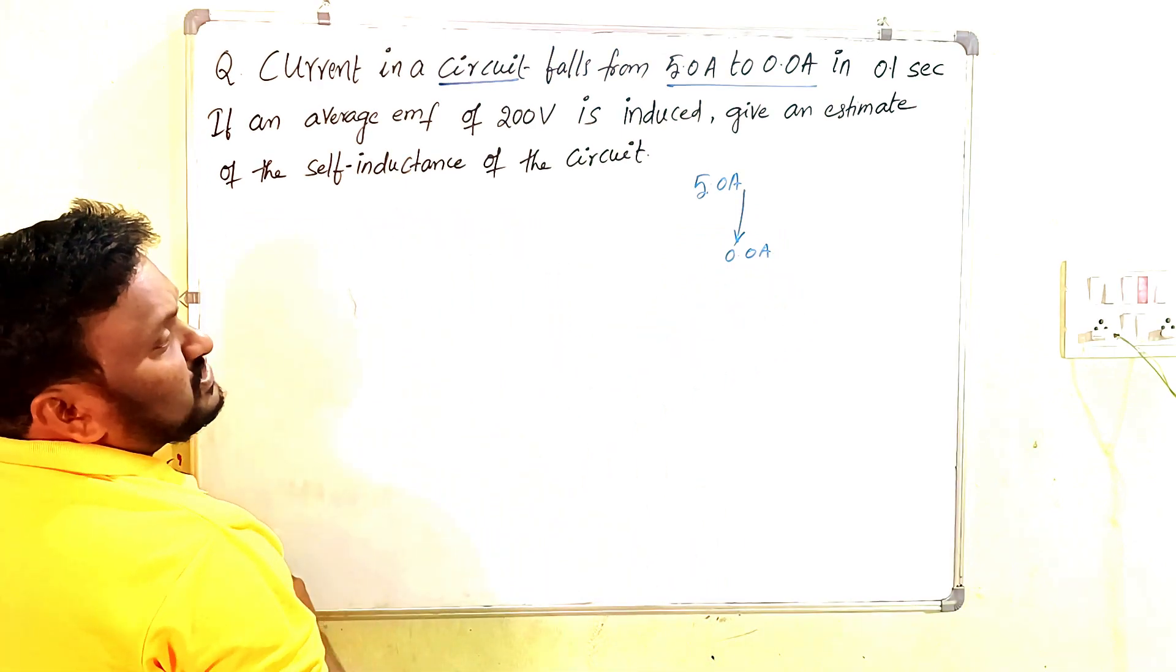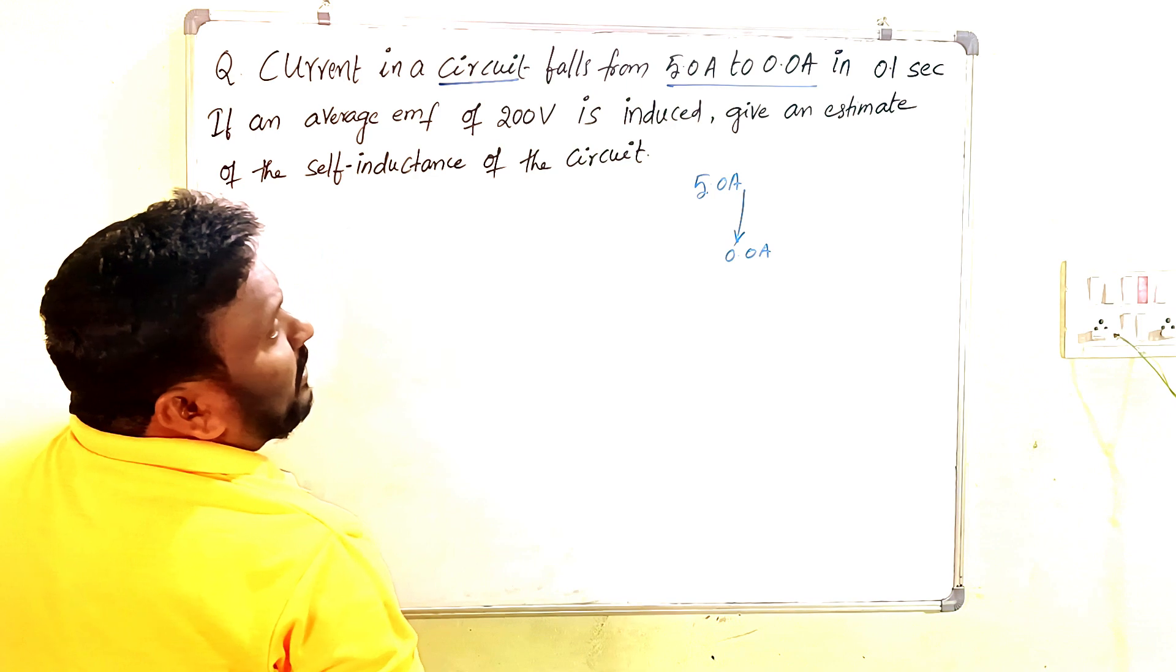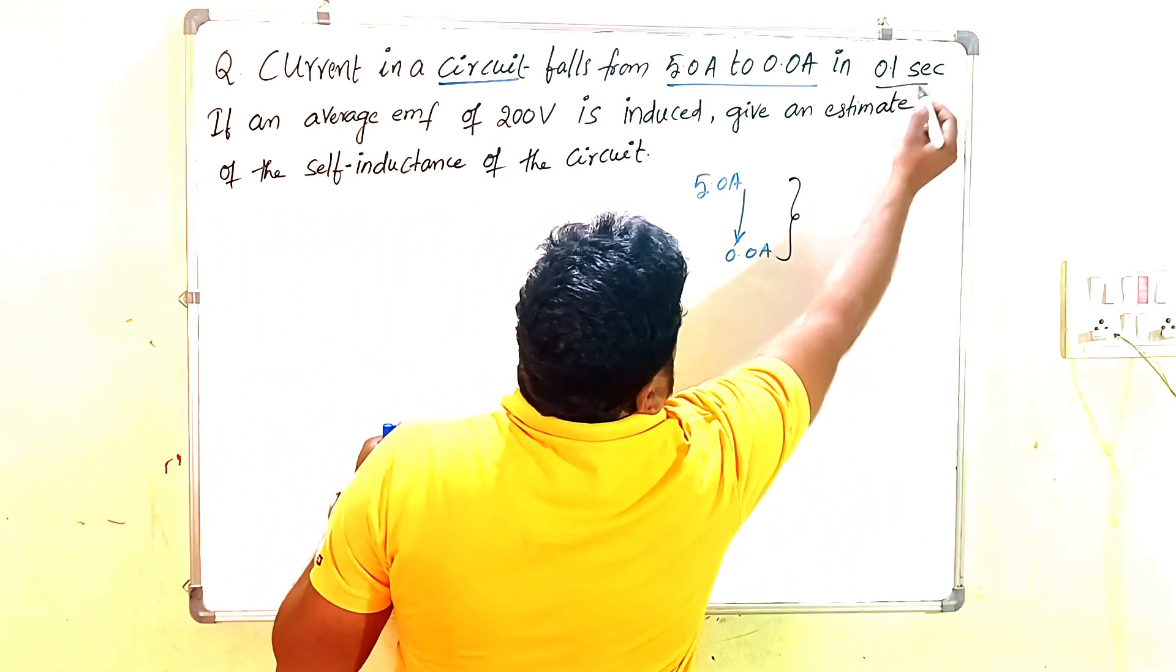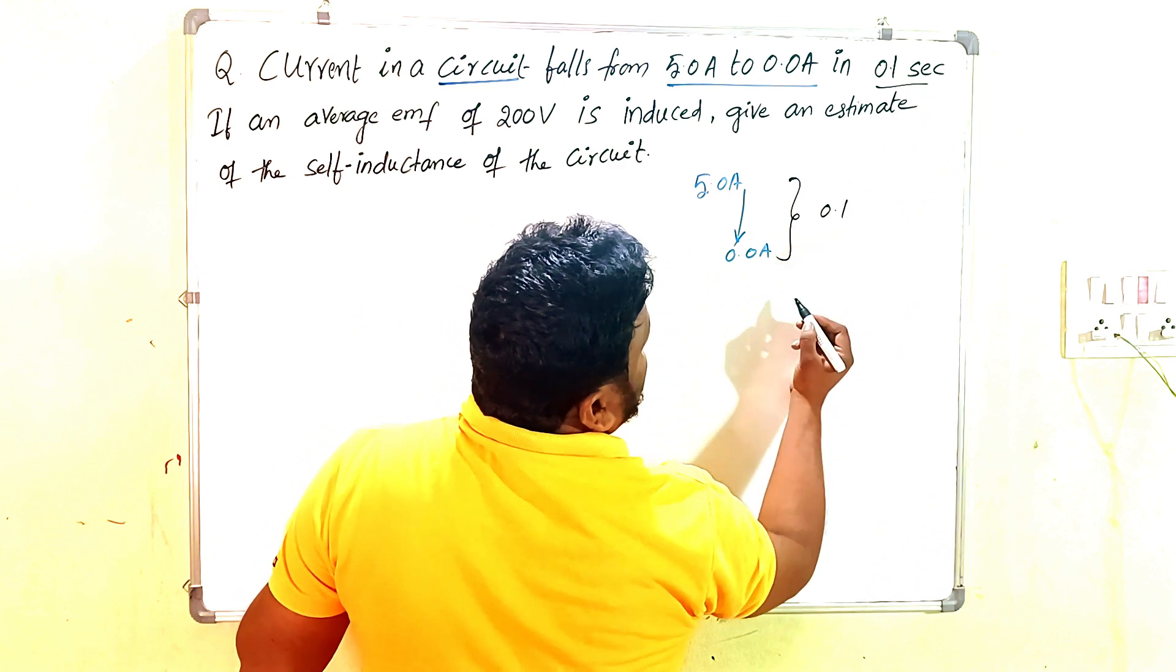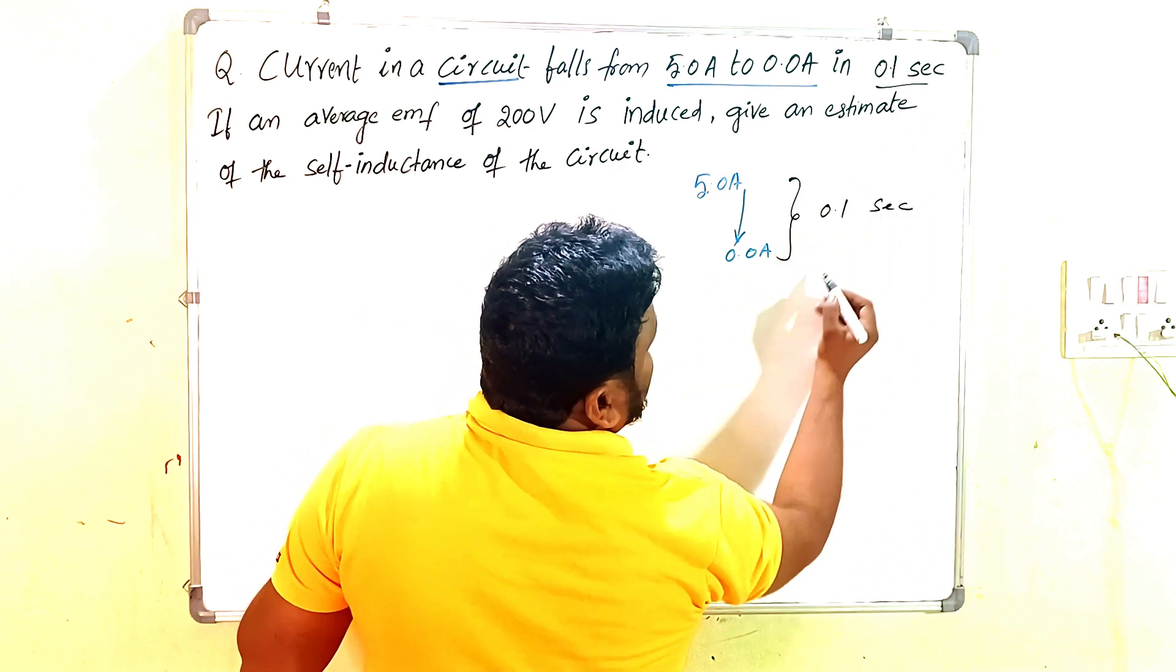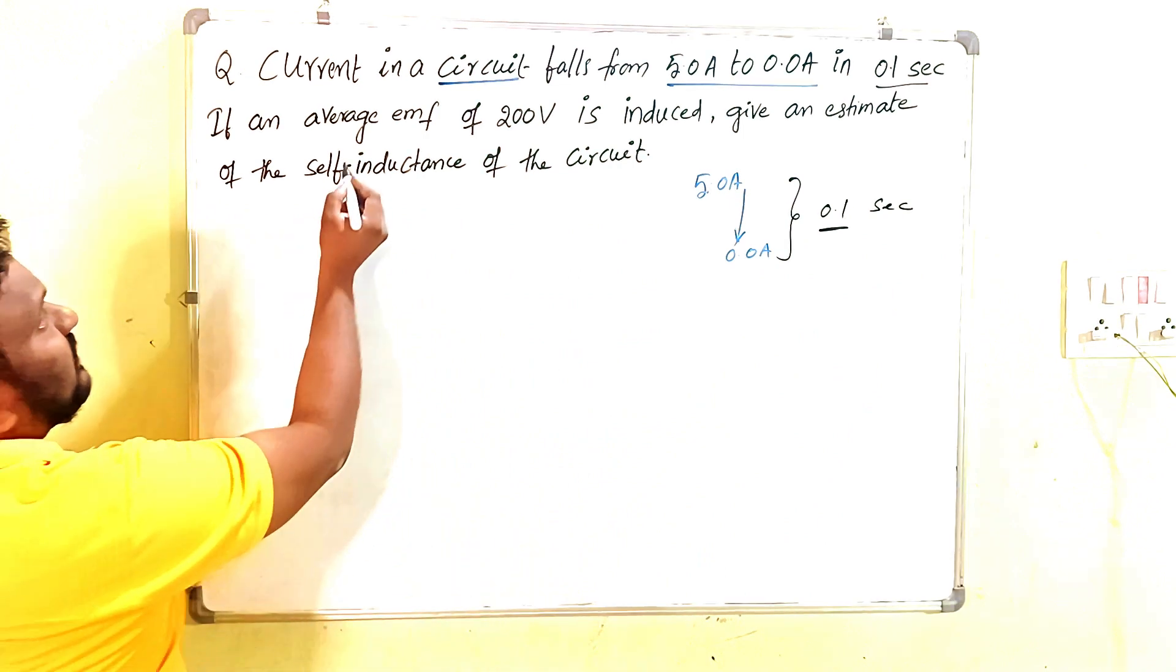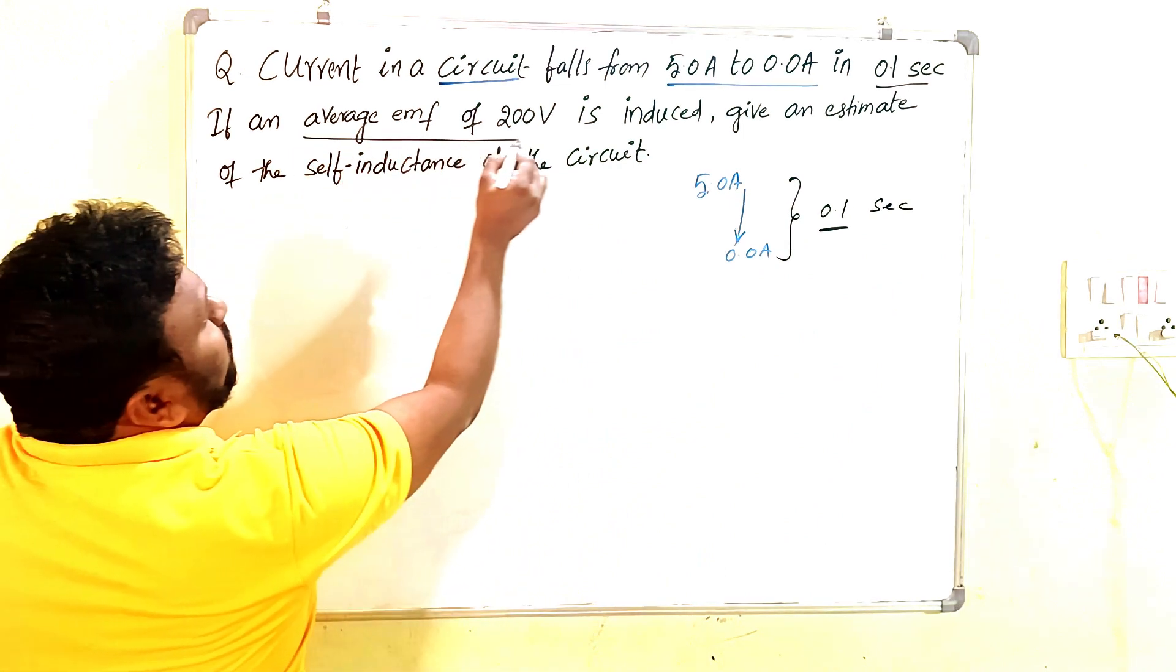Initial current is 5.0 amperes, final is 0.0 amperes. The time interval is 0.1 seconds, and the average EMF induced is 200 volts.